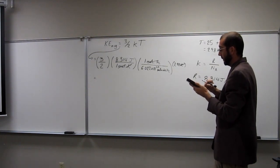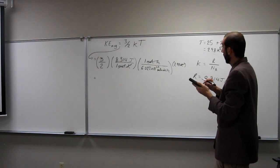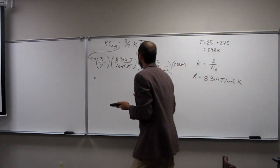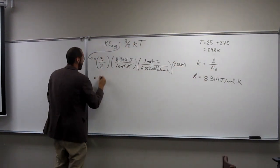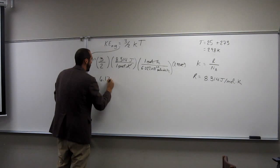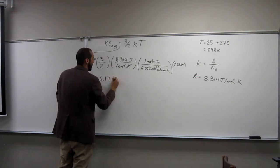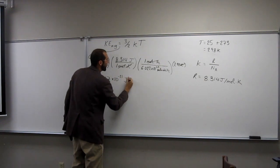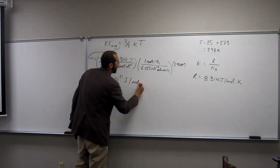314, times 2 in IVA, divided by 2, divided by 6.022. Okay, and I got this number here, 6.17 times 10 to the negative 21 joules per molecule.